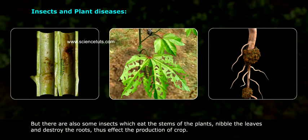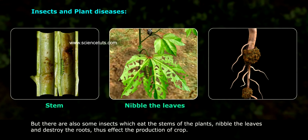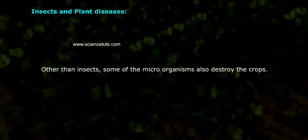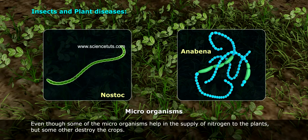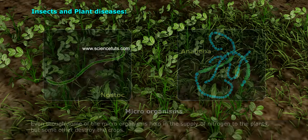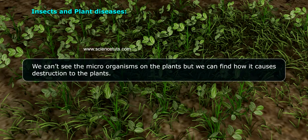Insects and plant diseases: apart from weeds, plants are also affected by insects. There are some insects which eat the stems of the plants, nibble the leaves, and destroy the roots — this affects the production of crops. Other than insects, some microorganisms also destroy the crops. Even though some microorganisms help in the supply of nitrogen to the plants, some others destroy the crops.